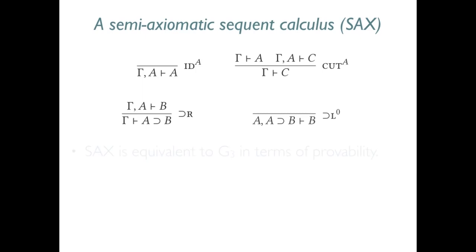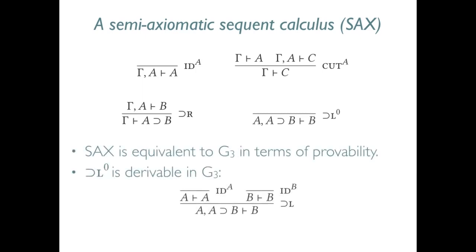This change does not affect provability. The new axiom was already derivable in the original sequent calculus, G3, using the identity rule and the usual implication left rule.